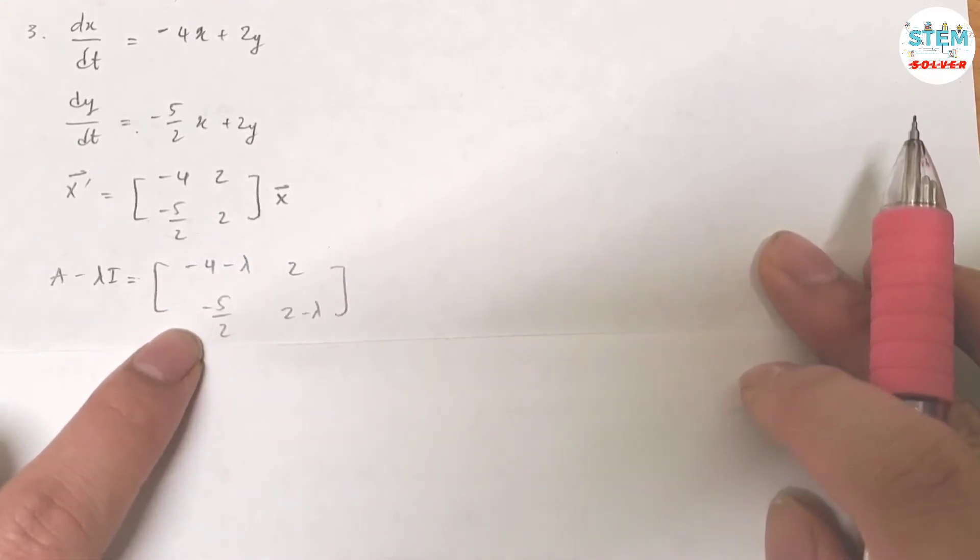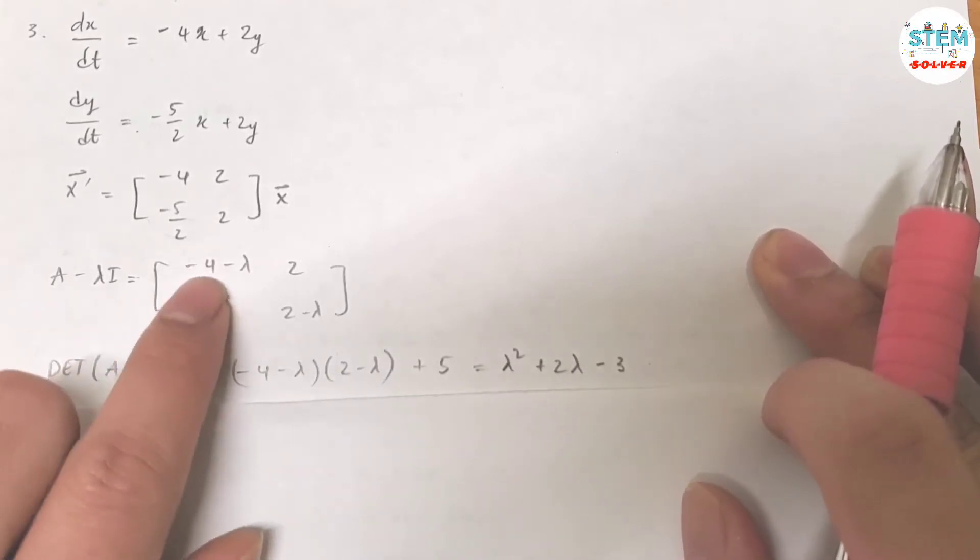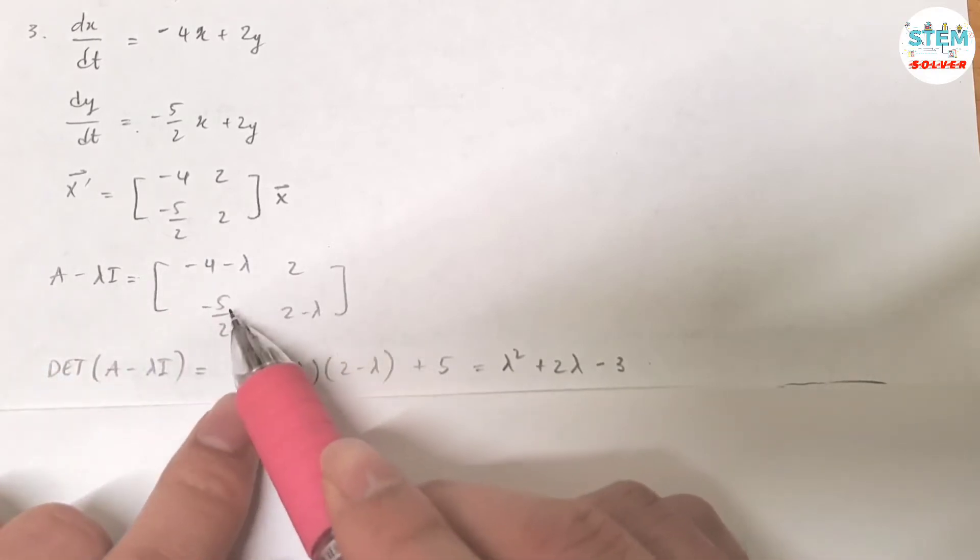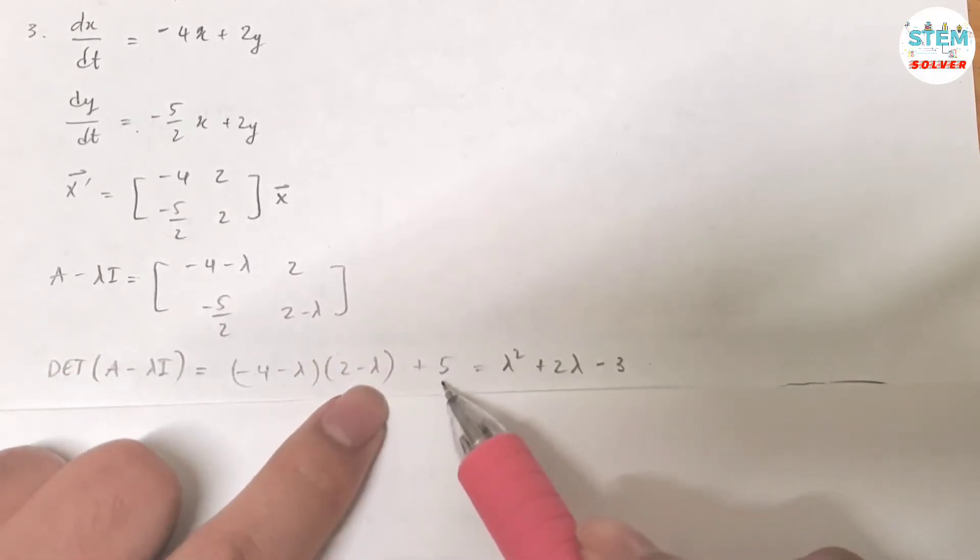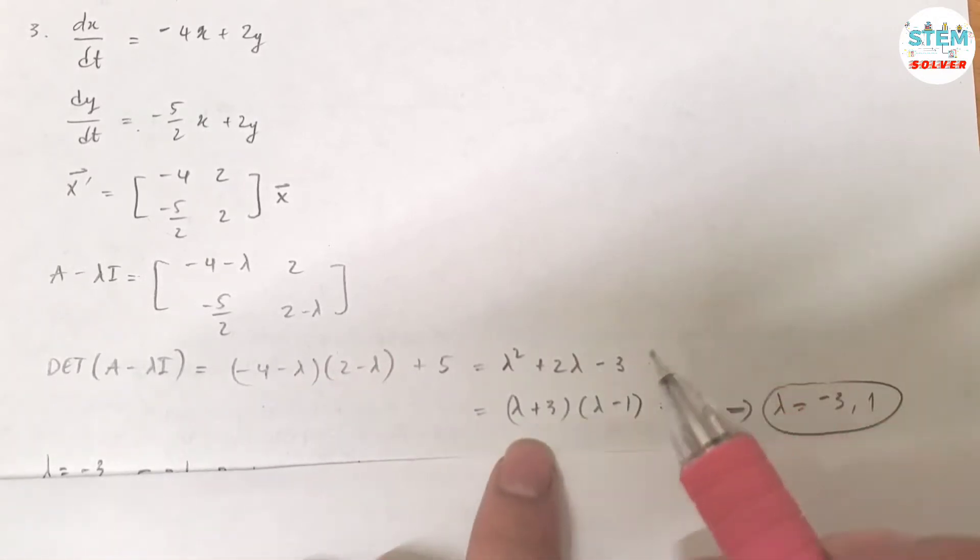And then you are going to find the determinant of A minus lambda I. That gives you negative 4 minus lambda times 2 minus lambda minus 2 times negative 5 halves. And then you distribute this out, simplify it down. You will get lambda plus 3 times lambda minus 1. Set it equal to 0 and then solve for lambda.